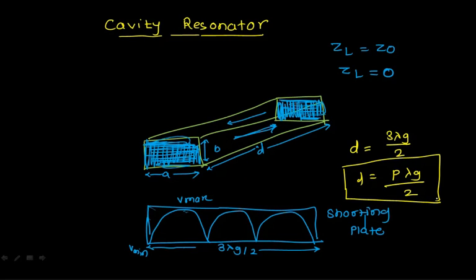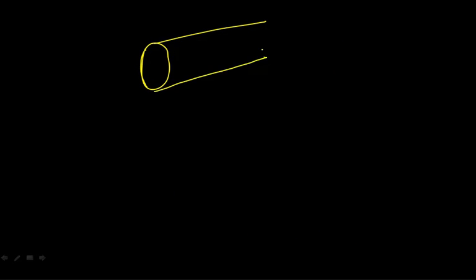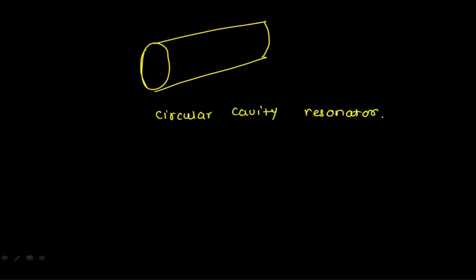This is the simple structure of the rectangular cavity resonator — formed by enclosing two ends of a rectangular waveguide with shorting plates. For a circular waveguide, this structure is called the circular cavity resonator.